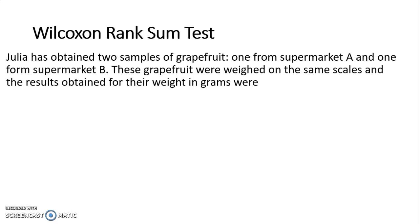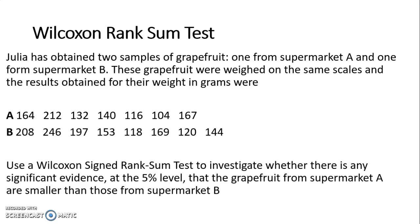Julia has obtained two samples of grapefruit, one from Supermarket A and one from Supermarket B. These grapefruit were weighted on the same scales and the results obtained for their weights in grams were. So there's our data for Supermarket A and there's our data for Supermarket B. Use a Wilcoxon signed Rank Sum Test to investigate whether there is any significant evidence at the 5% level that the grapefruit from Supermarket A are smaller than those from Supermarket B.